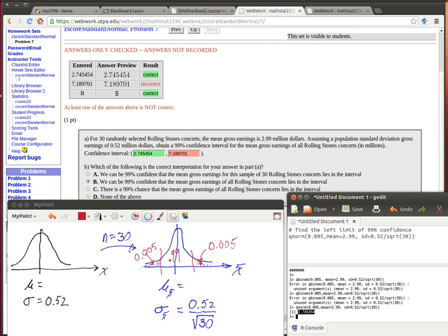So here's what I'm beginning with. Here's the distribution of all of the Rolling Stones concerts. I've drawn it as if it was normally distributed. The sample size is fairly large, so the central limit theorem tells us that when we look at the distribution of sample means of that size, that will be normally distributed.